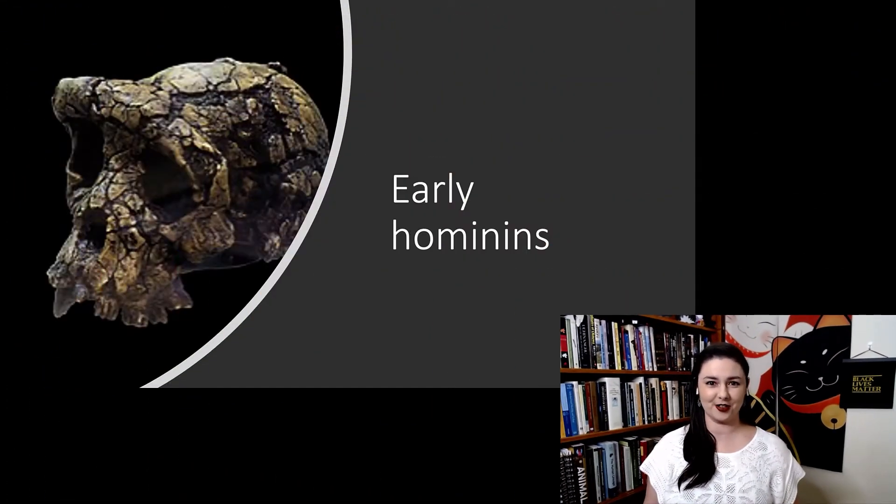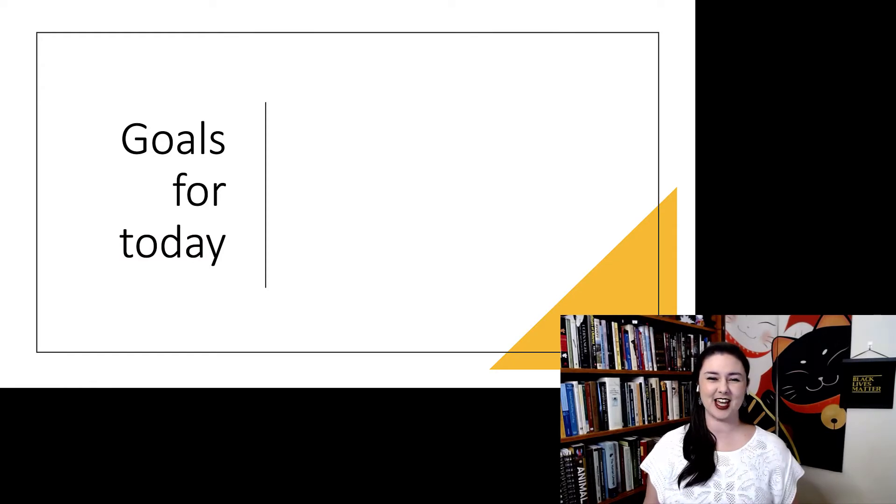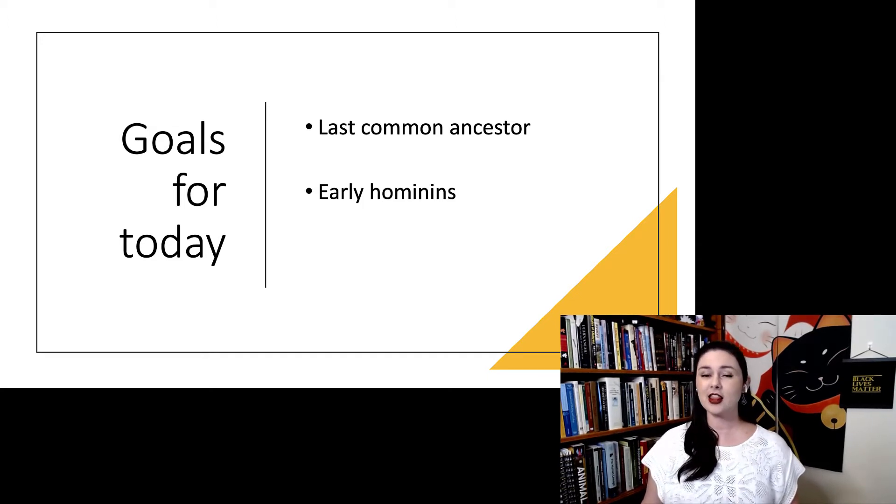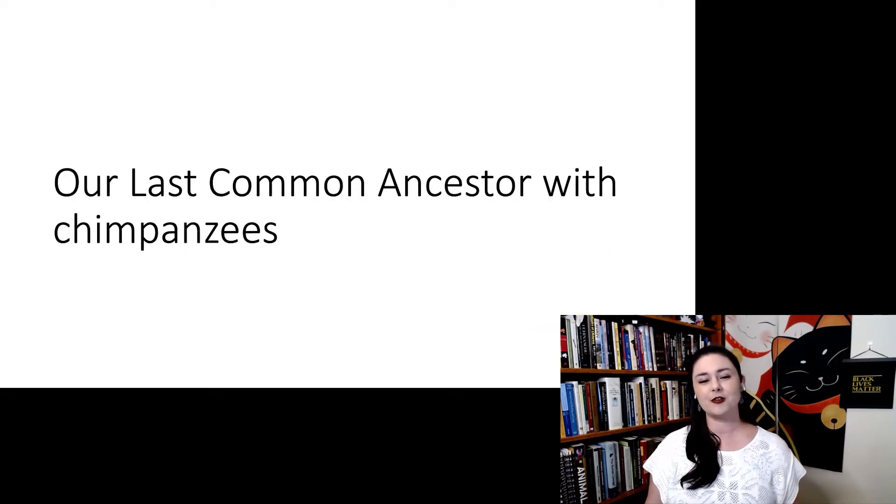Now we're going to start talking about early hominins. We have a couple goals for today. First, we're going to discuss the last common ancestor with chimpanzees and what we think that might have looked like. Then we're going to talk about different early hominin species. And lastly, we'll talk about why hominins are even bipedal in the first place. But of course, let's talk about this last common ancestor.